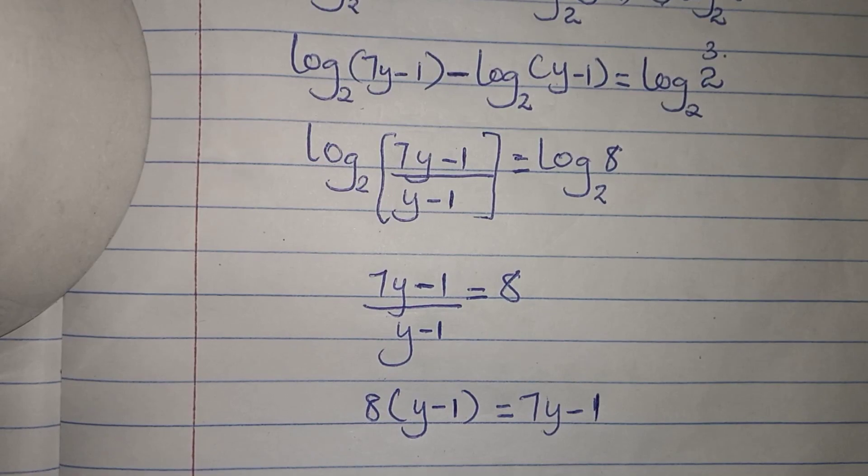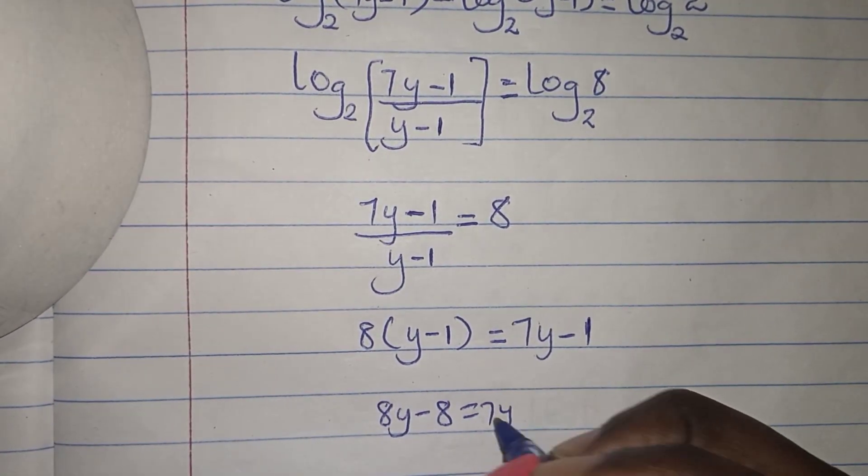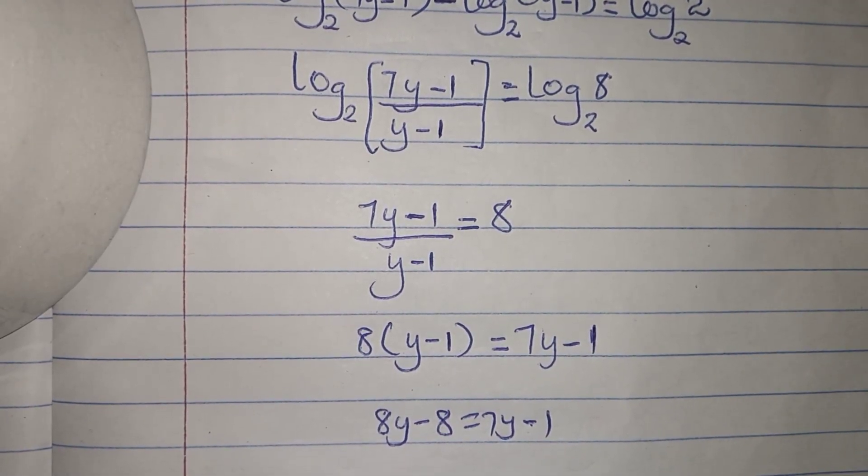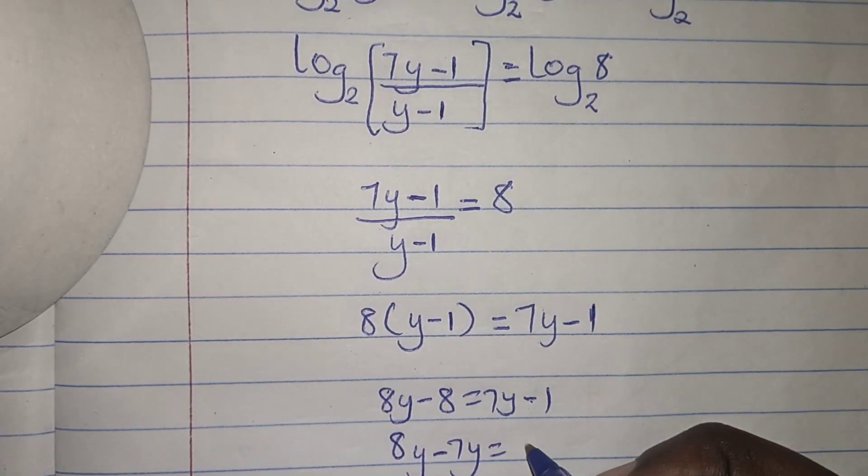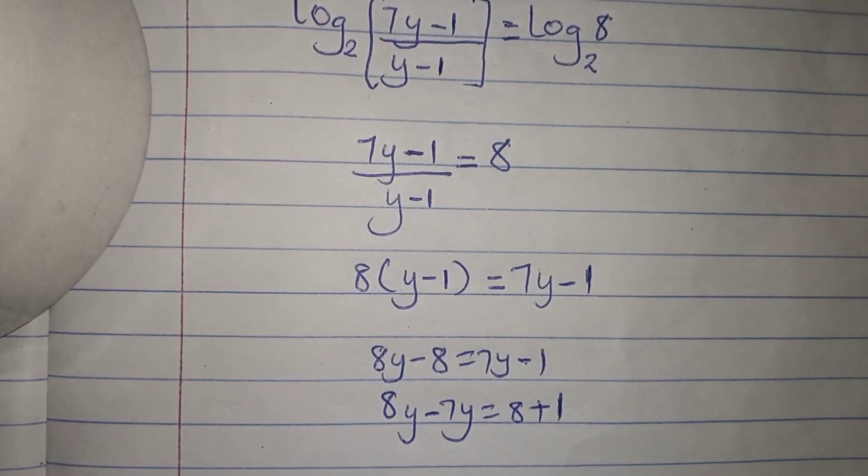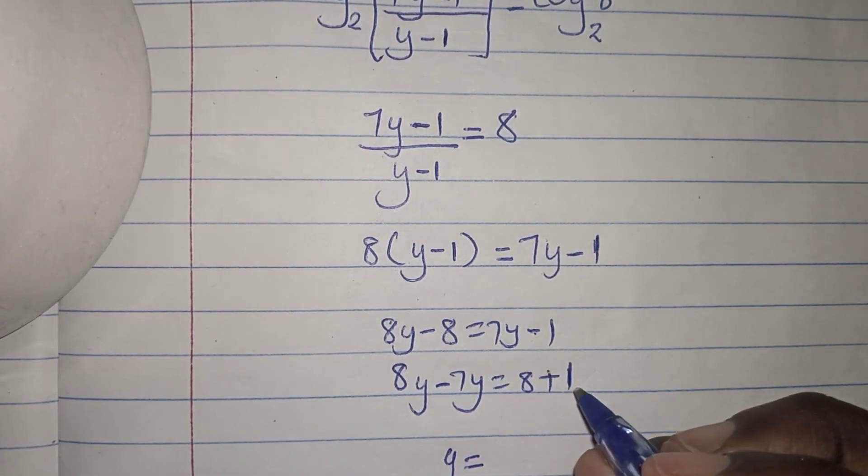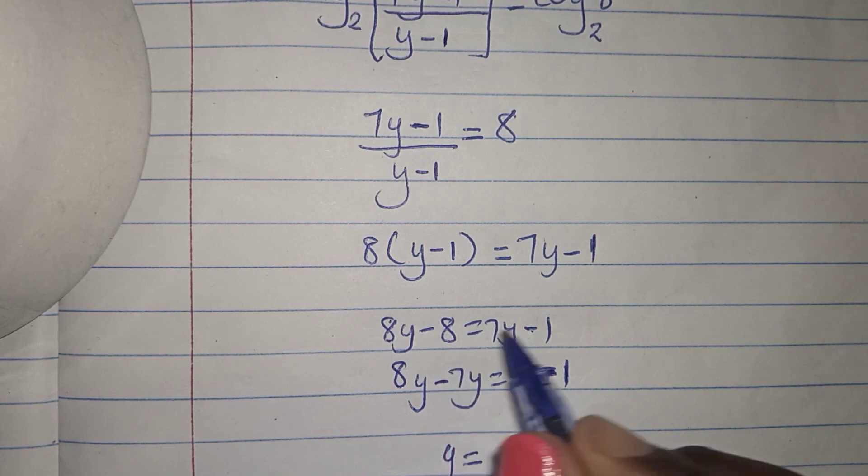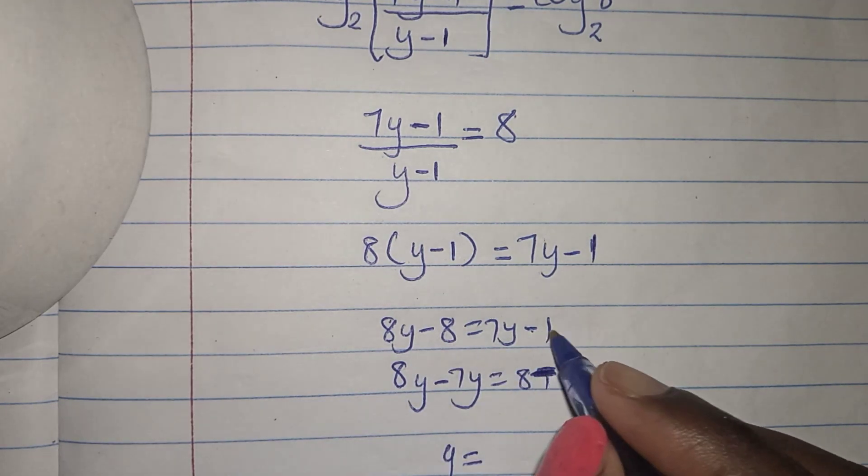The next step: open the brackets. 8y - 8 equals 7y - 1. Next step: collect all the like terms together. 8y - 7y is y. Negative 8 has come to the other side as positive, so 8 minus 1 equals 7.